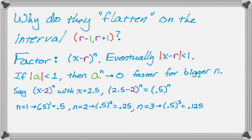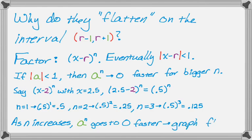That's why it flattens out on that interval that's one unit to the left and the right of the root. As n increases, a to the n is going to go to 0 a lot faster. Since a to the n is going to 0 faster, the graph itself is going to flatten out. That's why you'll see these graphs flatten out in an interval that's two units wide, one in either direction.